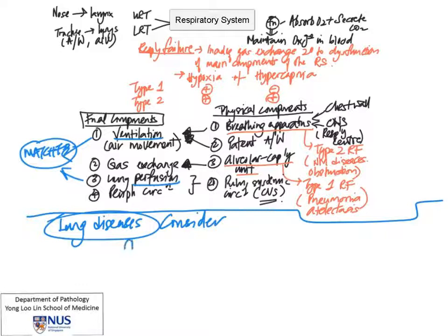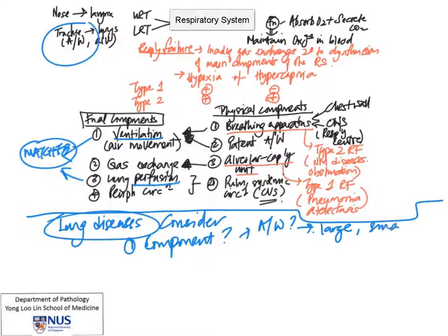When looking at lung diseases, it's important to consider two main points. First, which component of the lung is this disease affecting? This could be the airways—would it be the large airways or the small airways? Because the clinical presentation and diagnosis would be different.